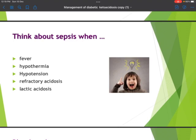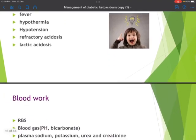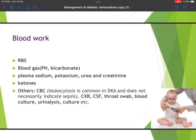Initial blood work should include random blood sugar, venous or arterial blood gas for pH and bicarbonate, plasma sodium, potassium, urea, creatinine, and ketone levels in blood or urine. Look for underlying infection: a full blood count for leukocytosis — though be aware leukocytosis can occur in pediatric DKA without underlying infection. Send a chest X-ray if the patient has respiratory symptoms, a throat swab for sore throat, blood culture if looking for infection focus, and urine analysis and culture.